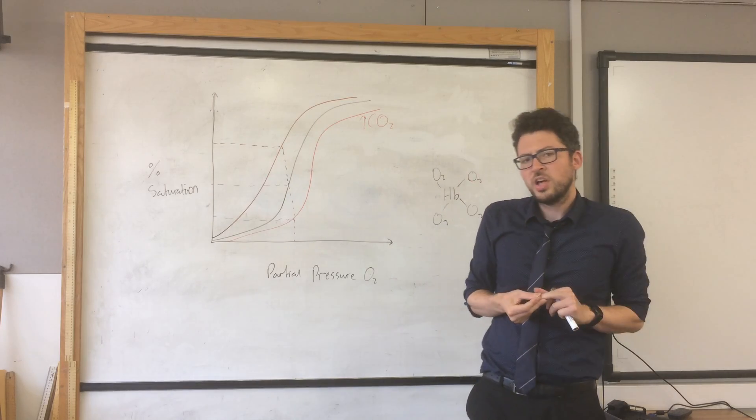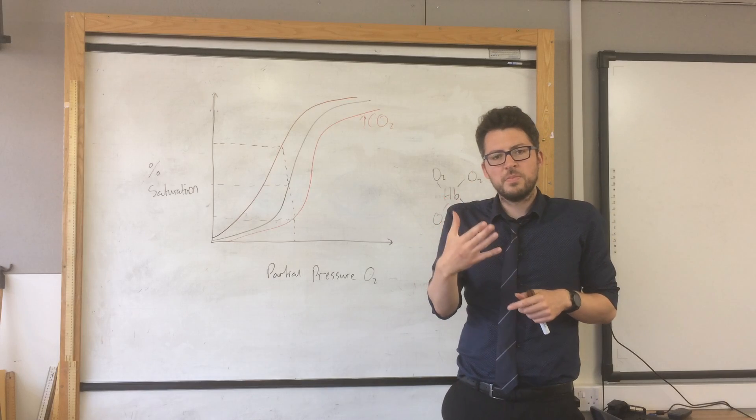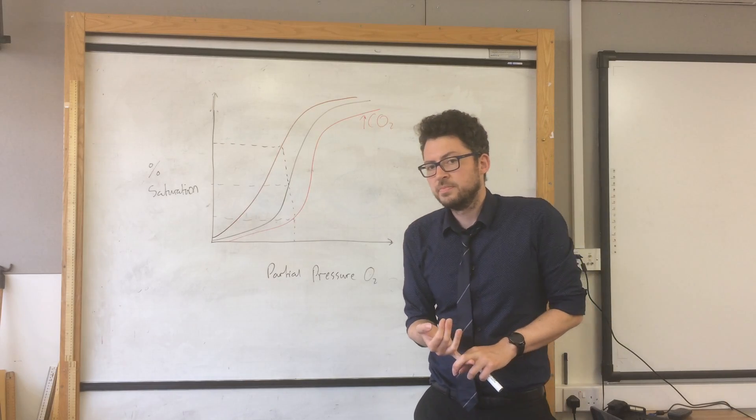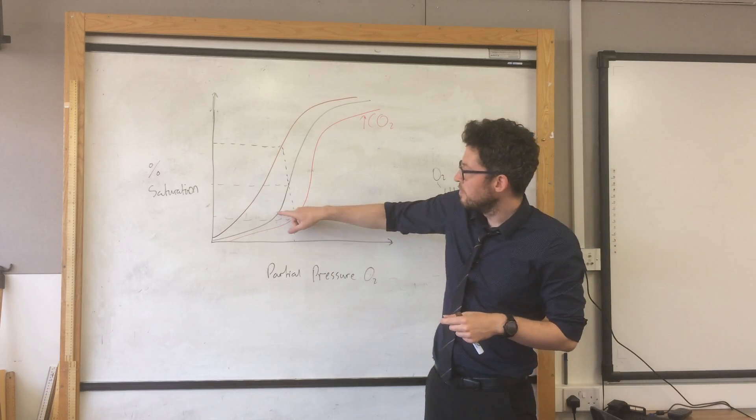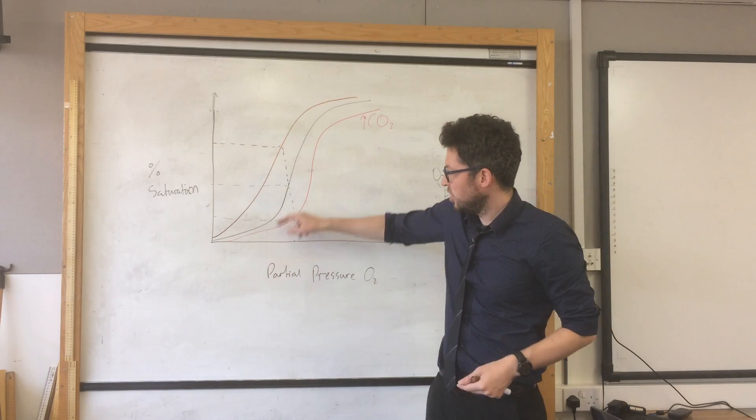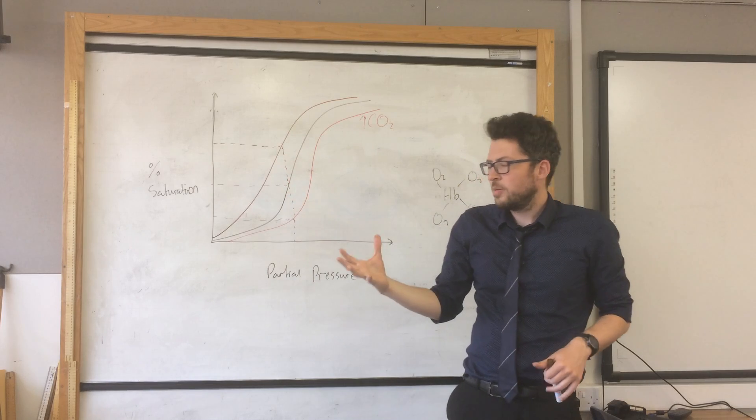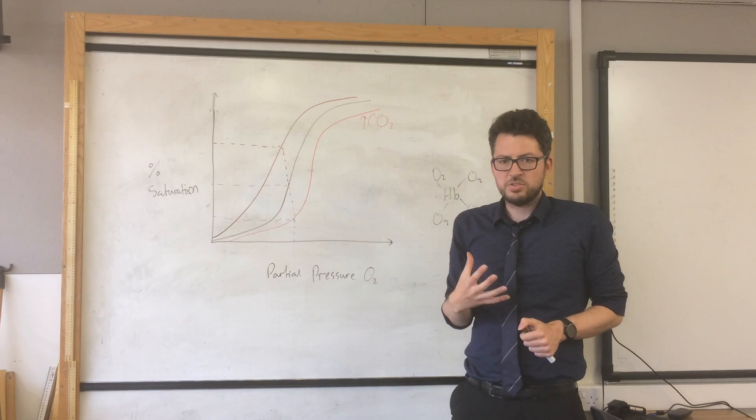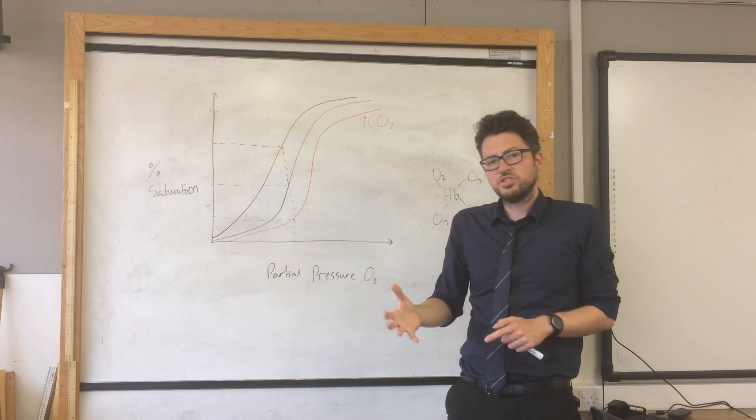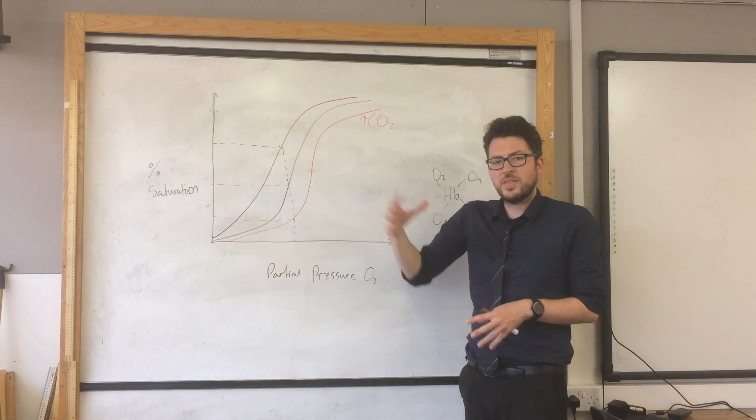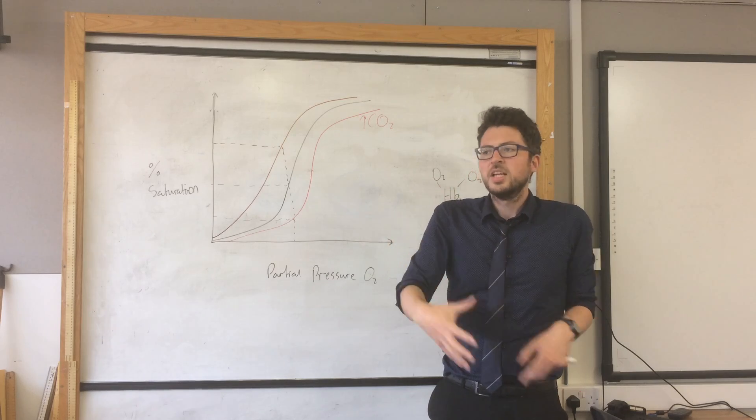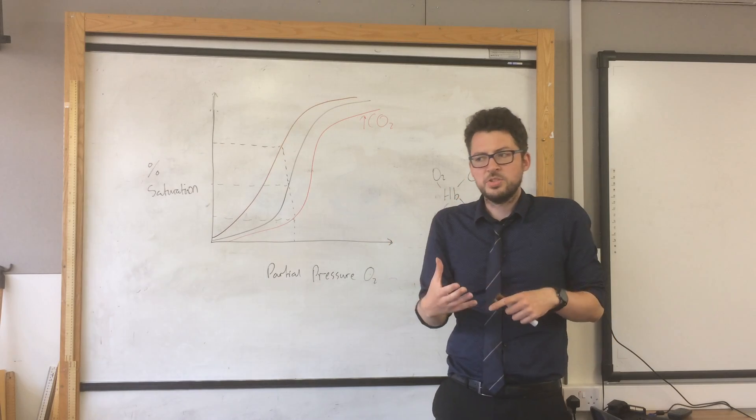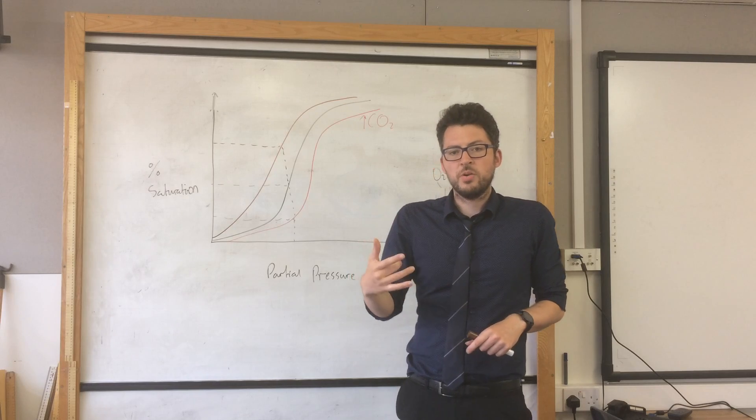Now that is because the fetus obviously needs to get its blood from the mother through the placenta. So in the same partial pressures where the mother's hemoglobin would be giving up oxygen, the fetal hemoglobin is able to take on that oxygen. So it's able to take the oxygen from the mother's blood and bind to that oxygen. That oxygen in the blood can then be carried to the fetus, to all the cells of the fetus, allowing them to carry out respiration, grow and develop.